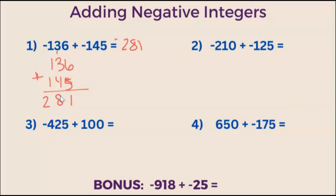Example 2. What is negative 210 plus negative 125? We set it up as if they were both positive integers, plus 125. And we add. We get 5, 3, 335. Both of these numbers are negative. So we add the negative sign and the answer is negative 335.